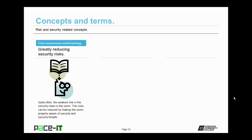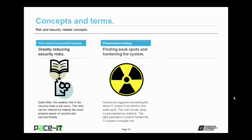User awareness and training can greatly reduce your security risks. Quite often, the weakest link in the security chain is the end user. The risks can be reduced by making users properly aware of security and security threats through awareness training and security training in general. This training should be conducted on an ongoing basis — it's never a one-and-done thing. Penetration testing is the finding of weak spots and the hardening of systems. It is actively and aggressively testing the whole IT system to find weak spots, including using social engineering methods on end users. The data generated is used to harden the IT system to mitigate future risks.